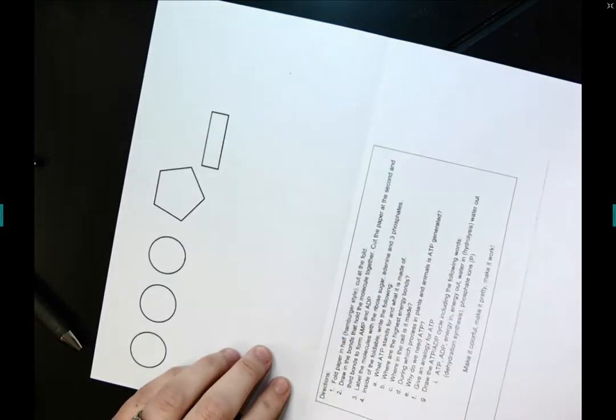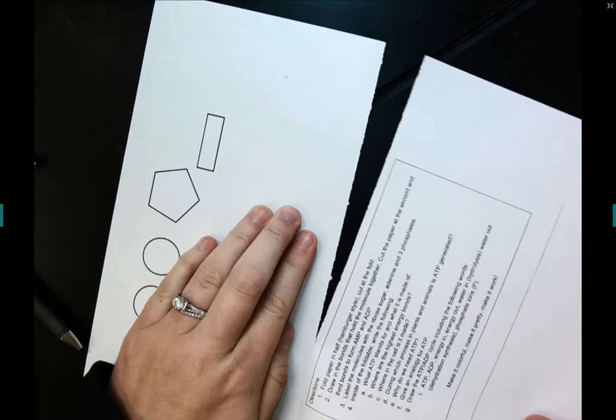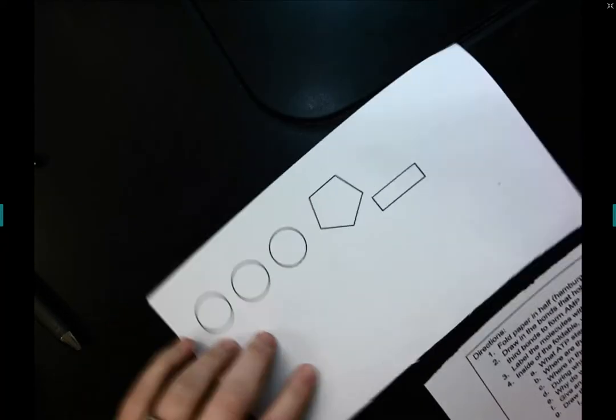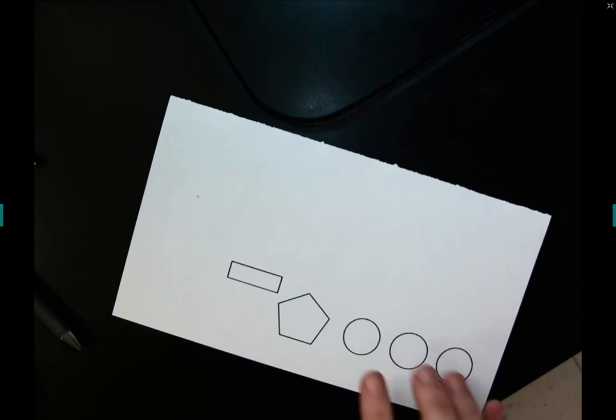So it's not completely in half, but it's folded in half. And then I'm just going to make that a really good crease. And then I'm going to cut or tear along the crease to separate my instructions from my ATP molecule. I'm just going to set the instructions aside.